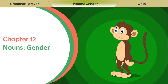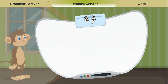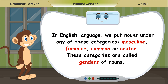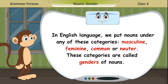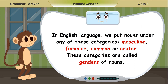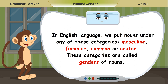Chapter 12: Nouns — Gender. In English language, we put nouns under any of those categories: masculine, feminine, common, or neuter. These categories are called genders of nouns.